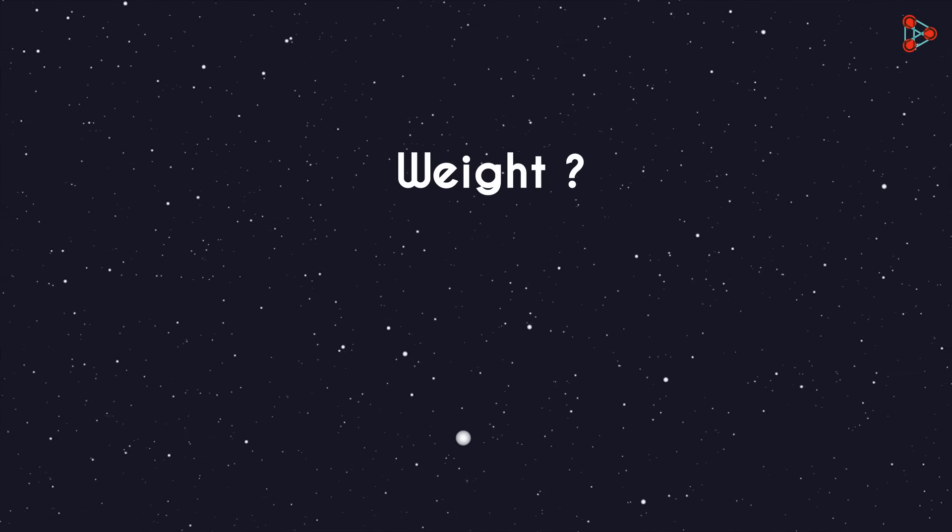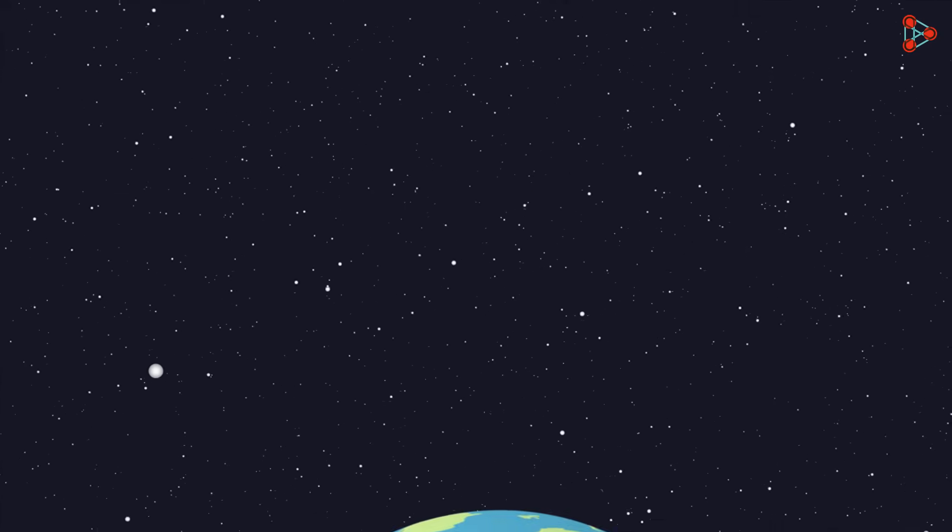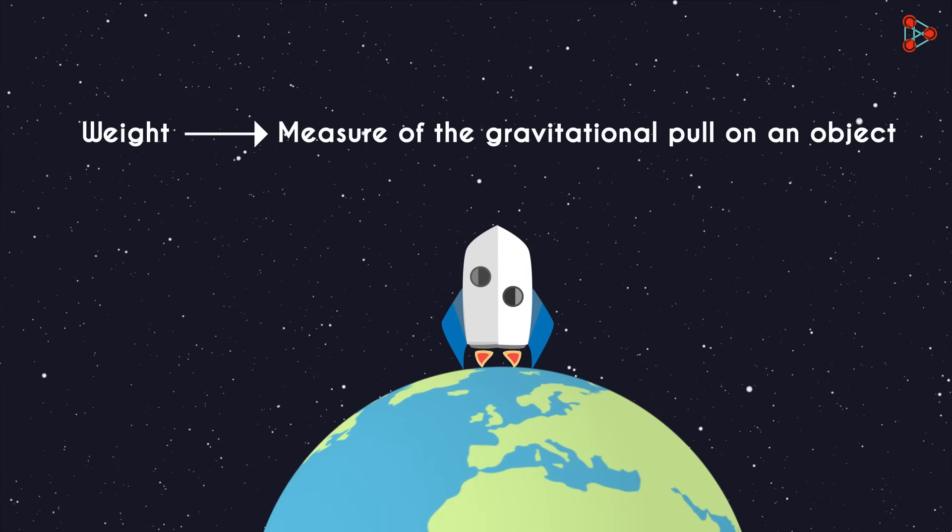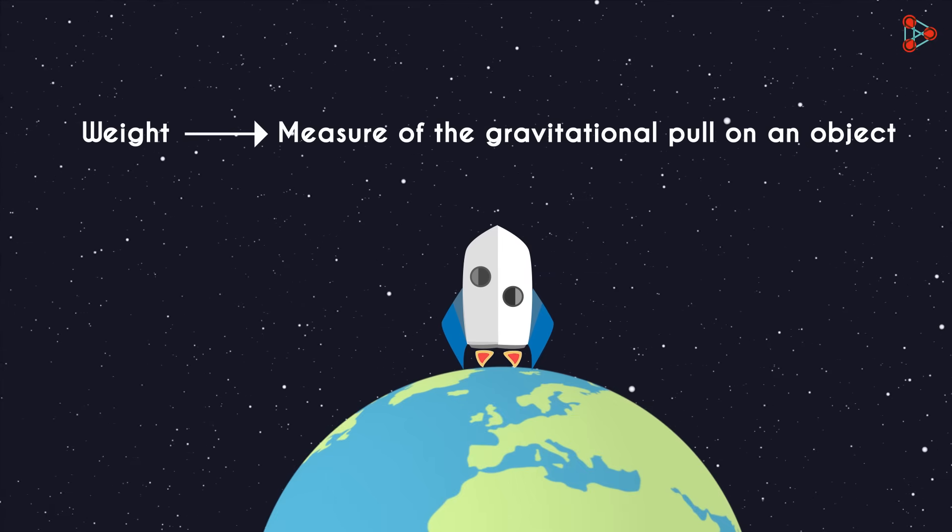Mass is nothing but the measure of how much matter an object has. Weight is a measure of how strongly gravity pulls on that matter. It's the measurement of the gravitational pull of an object.